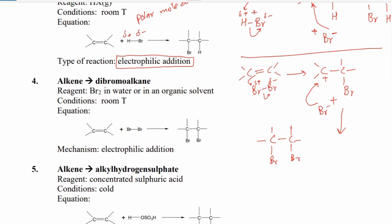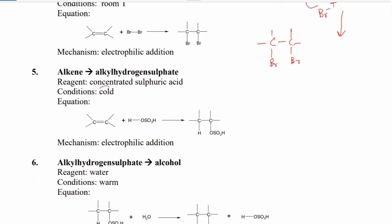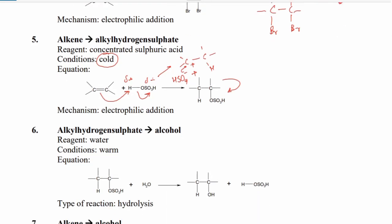Alkene can also form alkyl hydrogen sulfate. This takes place in the cold with concentrated sulfuric acid. Sulfuric acid creates a partial positive and partial negative, so the partial positive H attacks the alkene. In the first step a carbocation intermediate is formed, and then HSO₄⁻ attacks this carbocation and what we get is alkyl hydrogen sulfate.